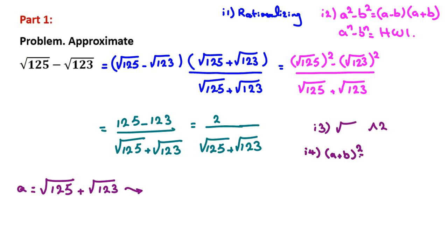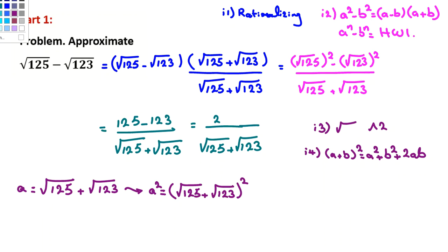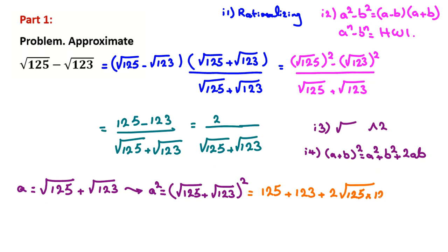Applying this identity: A² = [√(1/5) plus √(1/3)]². Using (A+B)² = A² + B² + 2AB, this becomes 1/5 plus 1/3 plus 2 times √(1/5) times √(1/3).